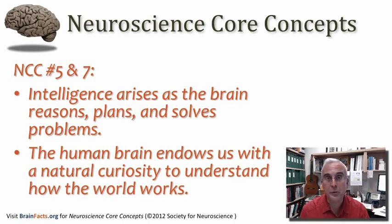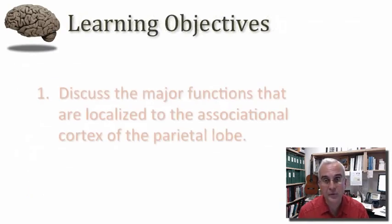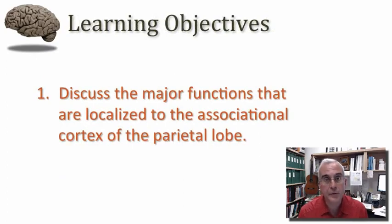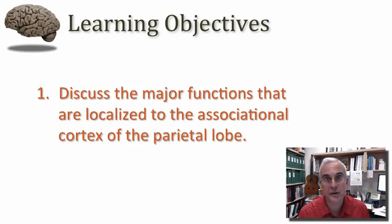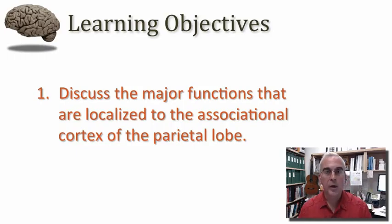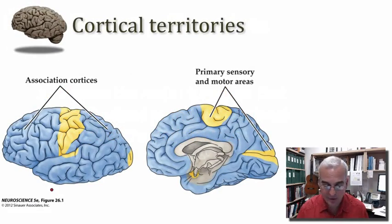Moving into our learning objective for today — there's just one objective — and that is for you to be able to discuss the major functions that are localized to the associational cortex of the parietal lobe. I'll remind you that when we are speaking of the associational cortex, what we are referring to is really the 75% or so of the cerebral mantle in each hemisphere that is beyond our primary sensory and motor regions.